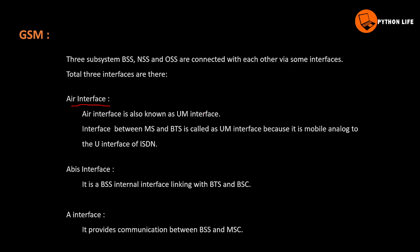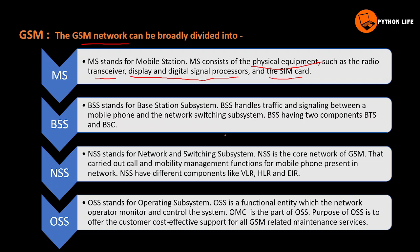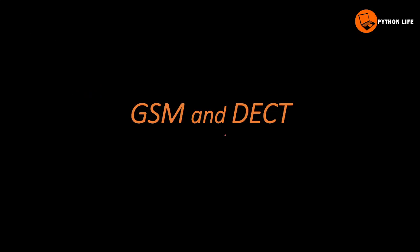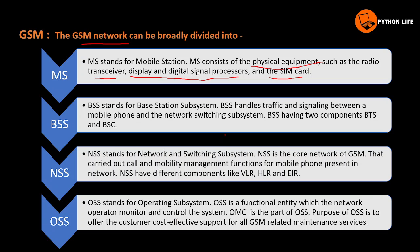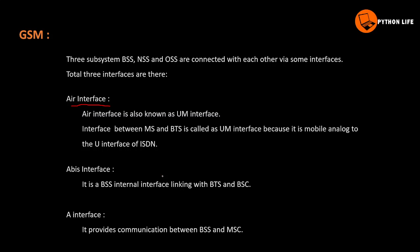The first interface is the Um interface - the interface between MS and BTS is called the Um interface. Because it is mobile, it is analog to the U-interface of ISDN. So the Um interface uses ISDN signaling.